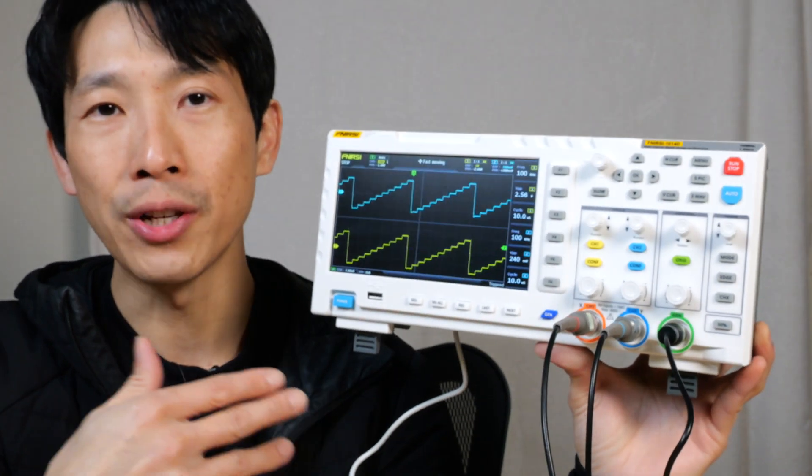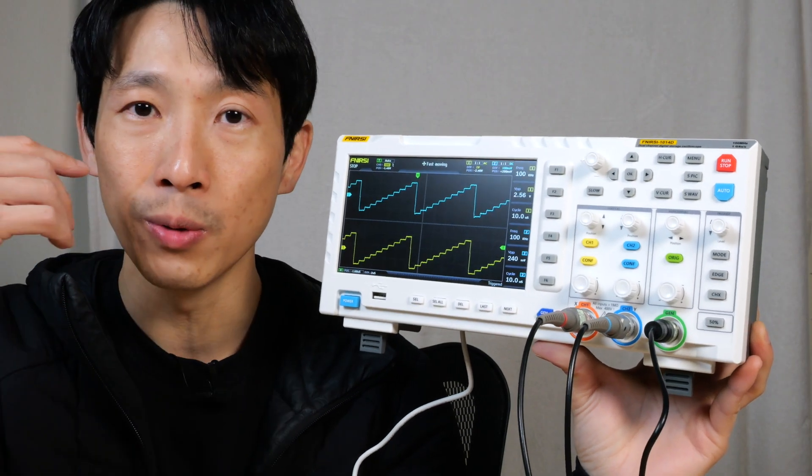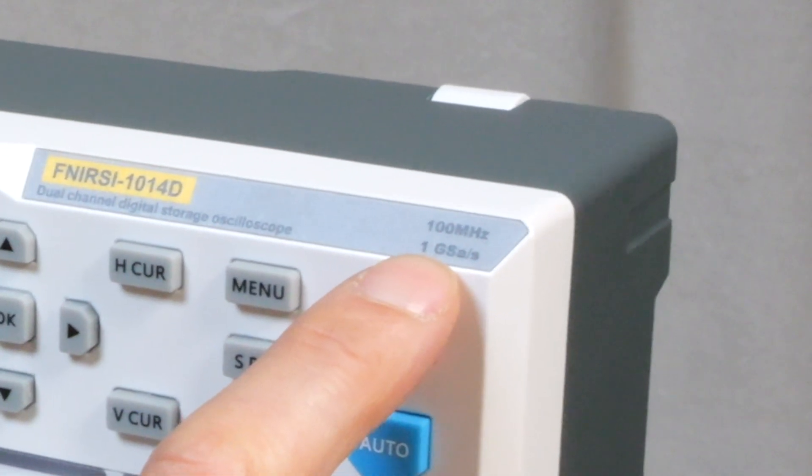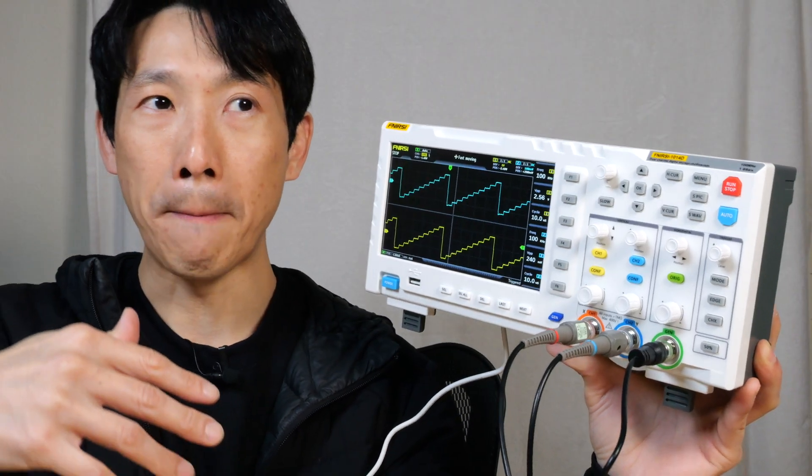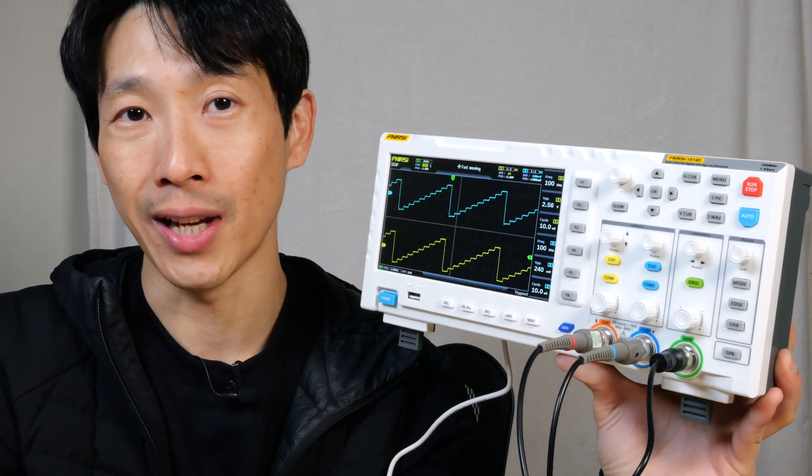Of course, in order to measure 100MHz, it needs to have a very fast sampling rate. That's what it says here, 1 giga samples per second. That's 1 billion samples per second.